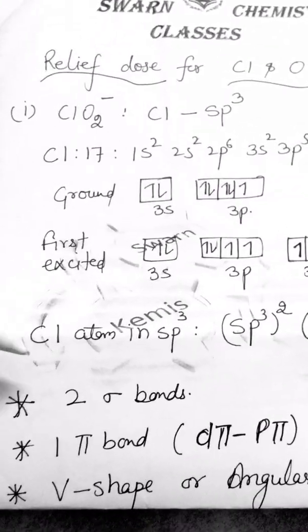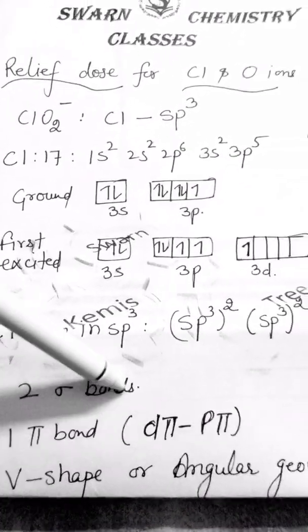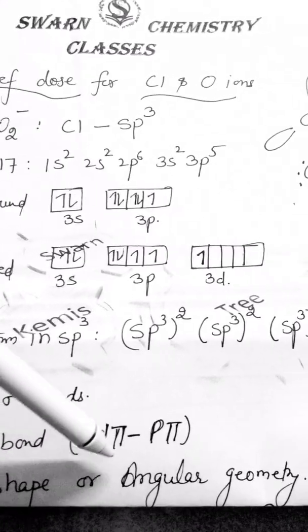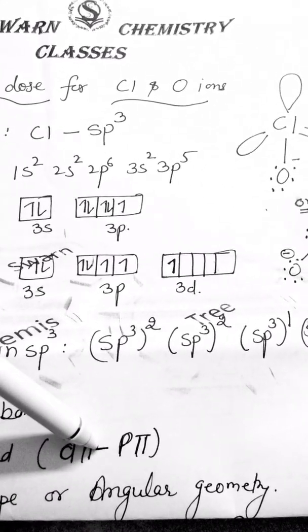There are basically two sigma bonds and one pi bond, that is a d pi p pi bond, and the molecule has a V shape with angular geometry.